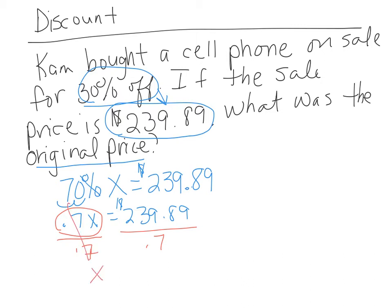And you get X equals, and stop, drop, divide here, 239.89. And the first problem you're going to run into is, you can't have a decimal out here, you have to have it as a whole number. So we're going to multiply by 10, and when we do that...